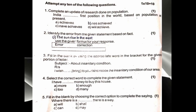Attempt any 10 of the following questions — this is your 10-mark grammar section. First question: complete an update of a research done on population. 'India dash first position in the world based on population at present.' Recently India got this position, so it is recent work — for recent work we use present perfect. India is a singular subject, so 'have' won't come; 'achieved' is simple past. So 'has achieved' is correct — option B. 'India has achieved first position in the world based on population at present.'